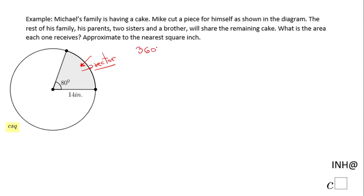The whole cake is 360 degrees, and Michael gets an 80-degree piece. That means for the others in the family, we have 280 degrees left. This is what's left for the rest of the family.